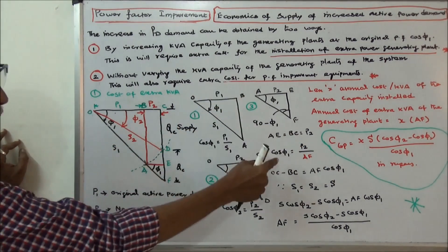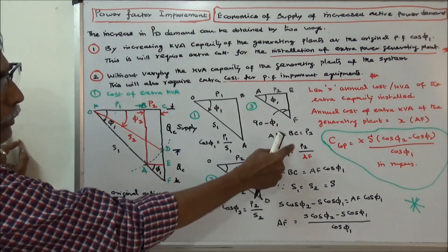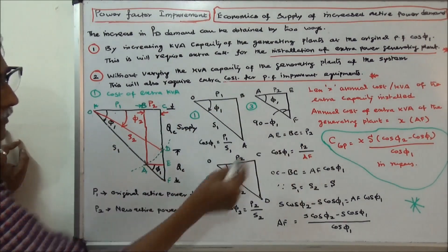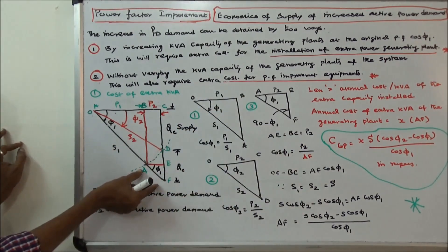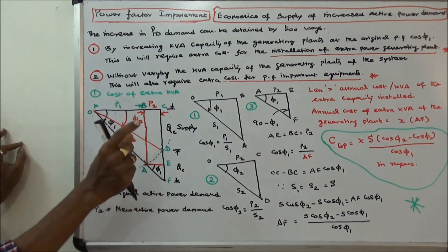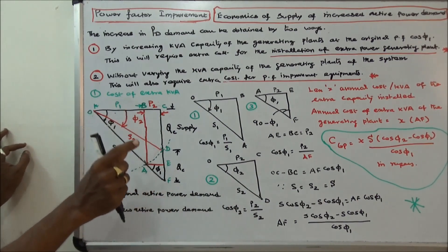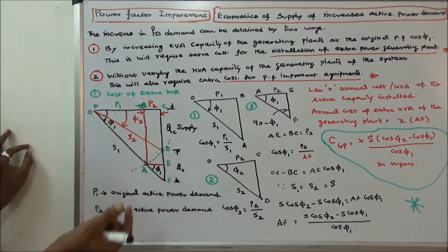Here, cos phi 1 is equal to P2 divided by AF, where AF is the extra power plant capacity in kVA. We have to calculate AF.